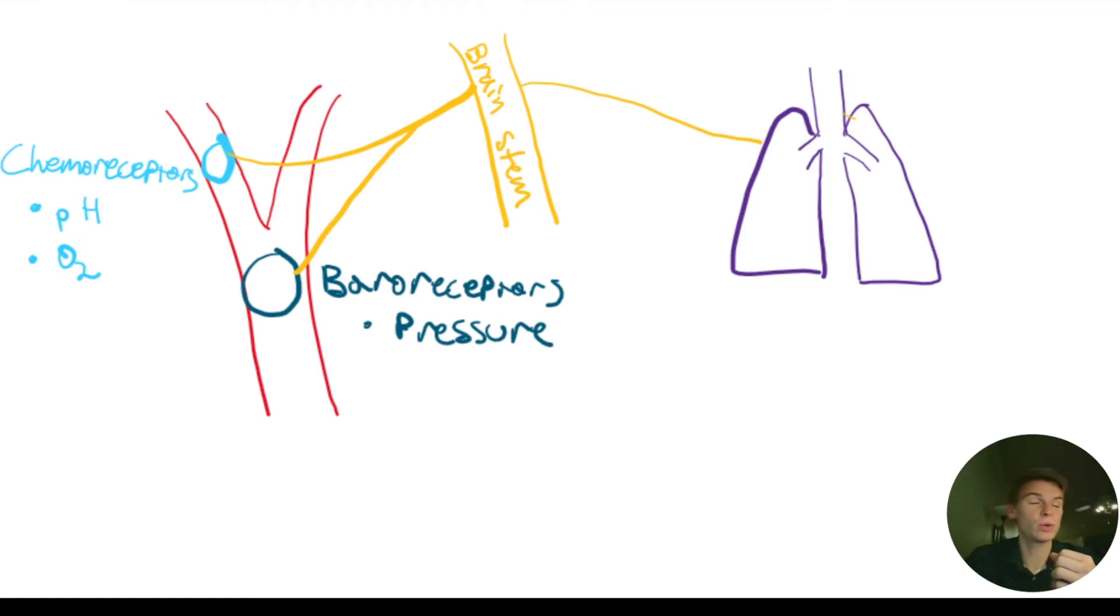And the brainstem can then talk to lots of different things. It'll talk to the heart, it'll talk to the kidneys about these things, but one thing that it talks to is our lungs. And so it's going to tell our lungs to breathe faster or slower, deeper, or more shallow based on this information.